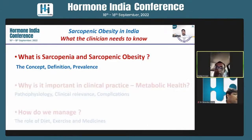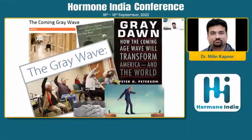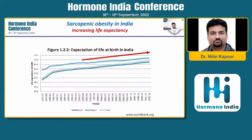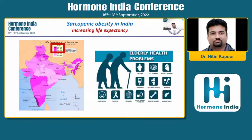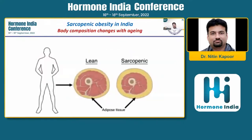Let's get started with what we call the great dawn or the gray wave. With increasing life expectancy across the globe and even in countries like India, we are definitely going to have more and more elderly people in society. When you look at life expectancy in some states in India, it is at par with many Western countries. We as healthcare professionals need to gear up and know how to address the problems of the elderly, and sarcopenia and sarcopenic obesity is definitely one of them.